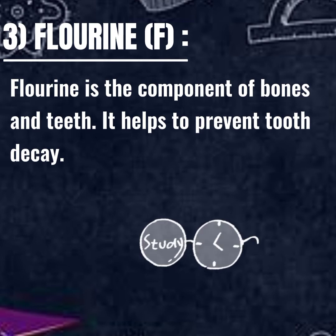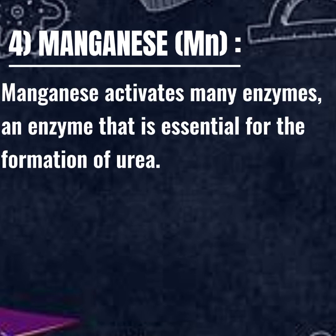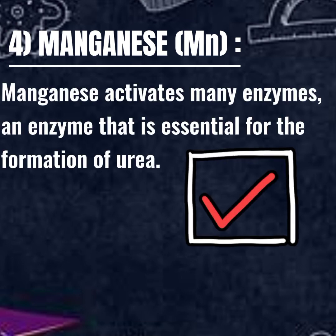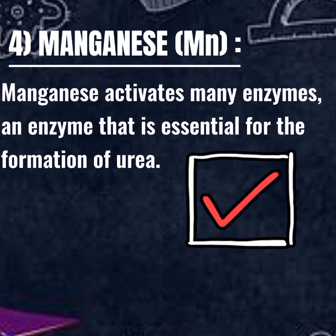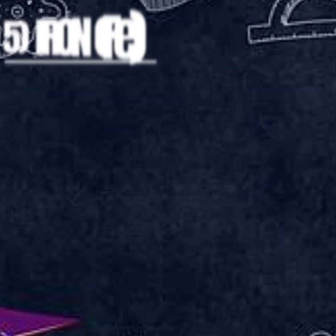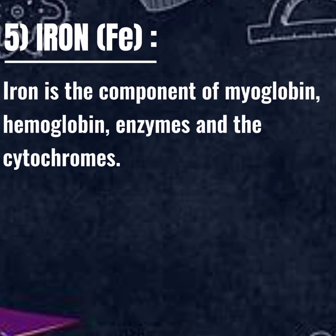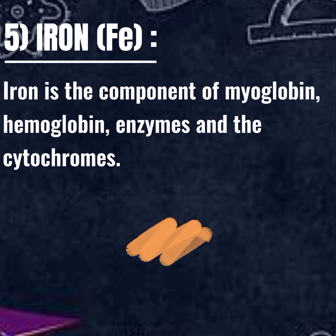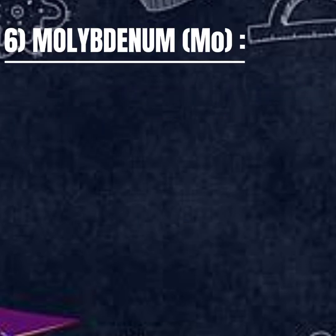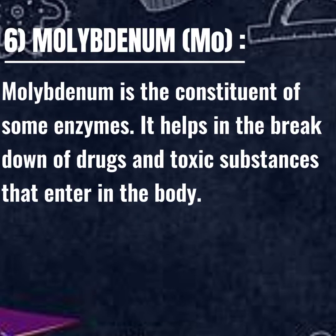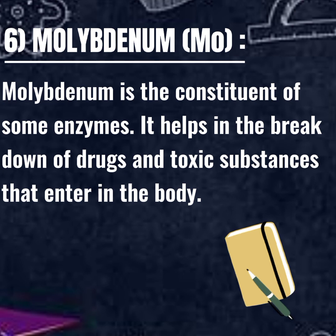Fluorine: it is the component of bones and teeth. It helps to prevent tooth decay. Manganese: manganese activates many enzymes, including an enzyme that is essential for the formation of urea. Iron: it is the component of myoglobin, hemoglobin, enzymes, and the cytochromes.